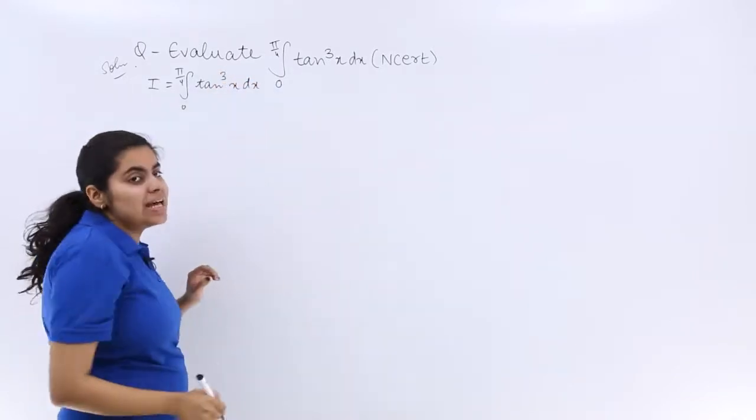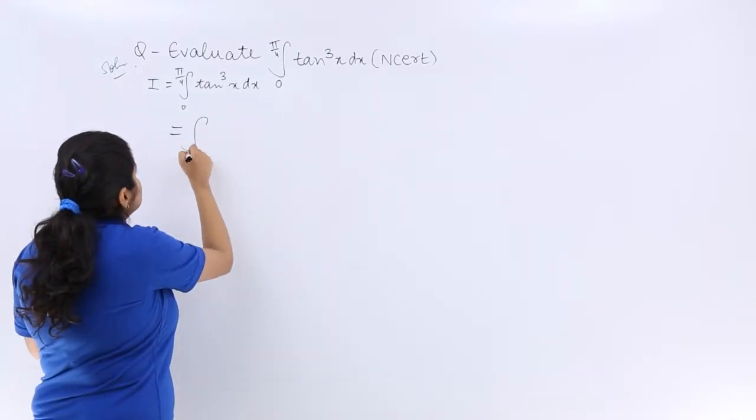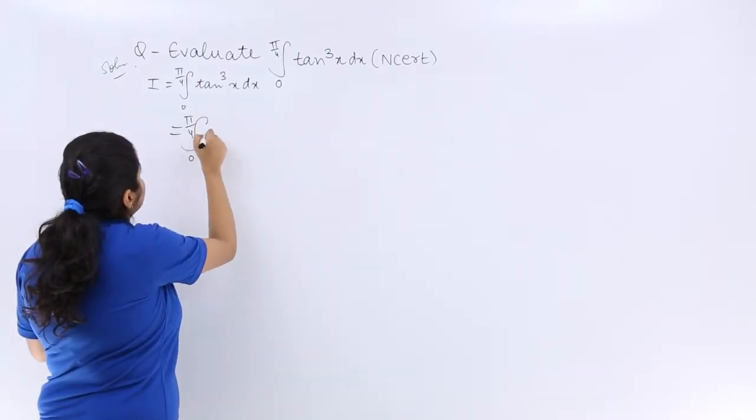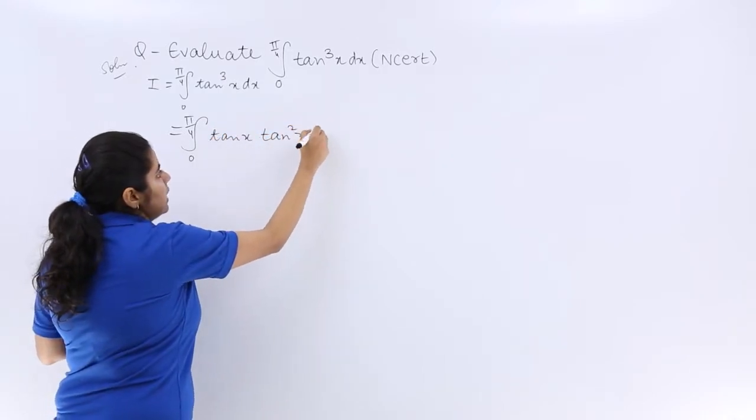in the next step as tanx multiplied by tan²x. So I write ∫₀^(π/4) tanx · tan²x dx.